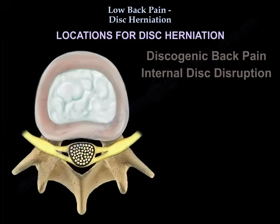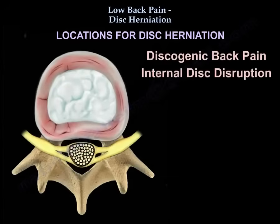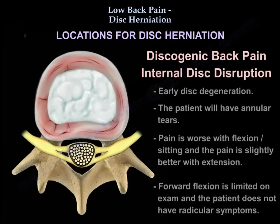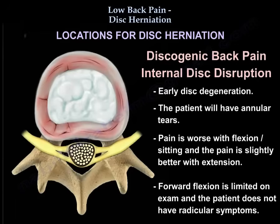Discogenic back pain, also known as internal disc disruption, involves early disc degeneration where the patient will have annular tears. Pain is worse with flexion and sitting, slightly better with extension. Forward flexion is limited on exam, and the patient does not have radicular symptoms.